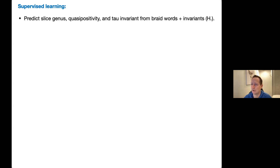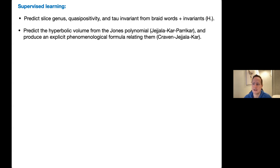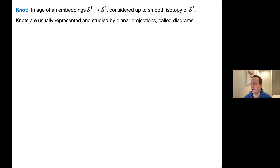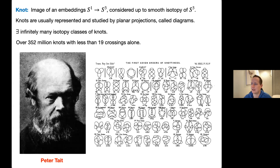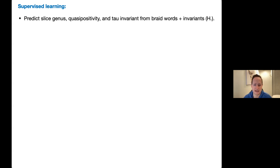In some earlier work from 2016, I showed we could predict things like the slice genus, quasi-positivity, and other invariants. The slice genus and quasi-positivity are very difficult invariants to compute — there are no algorithms for computing them and we have to rely on algebraic invariants. The fact that a neural network could predict them to over 97–99% accuracy in some cases was surprising to me.